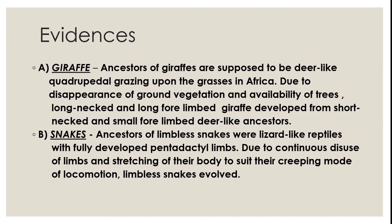Another example involves snakes. Ancestors of limbless snakes were lizard-like reptiles with fully developed pentadactyl limbs. Due to continuous disuse of limbs and stretching of their body to suit their creeping mode of locomotion, limbless snakes evolved. So, in the case of the giraffe it is the use theory, and in the case of the snake it is the disuse theory.